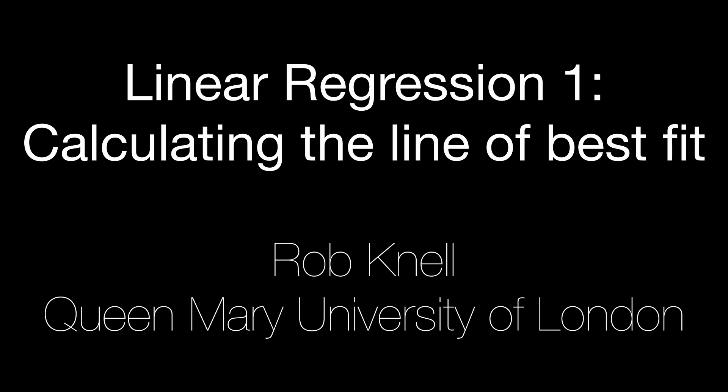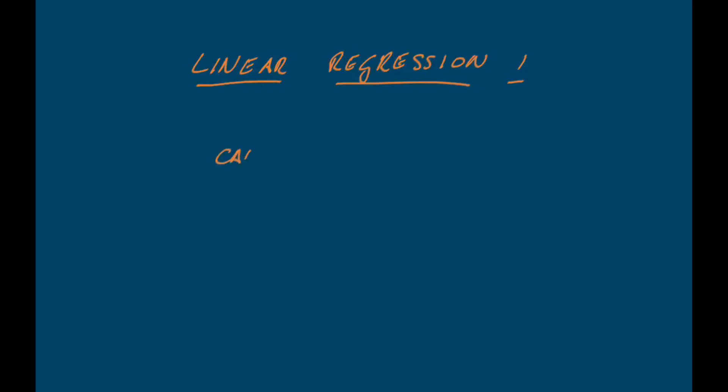Hello. In this video we're looking at the analysis technique we use to calculate the best fit line through a group of data. We're going to look at how we actually calculate the slope and the intercept of our best fit line, and then in a second video we'll look at how we can do a statistical test to find out whether or not our line has a slope that is significantly different from zero. But we're going to start by looking at some data and thinking about why we might want to put a line through those data and then how we can do that.